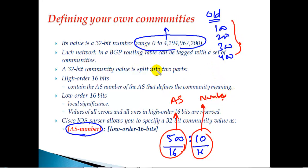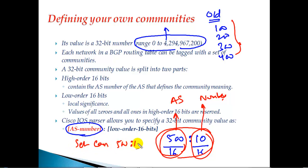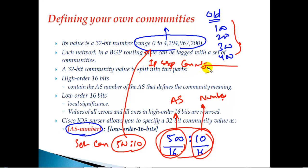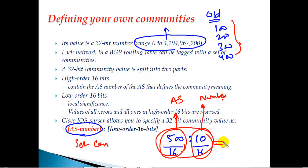If you tag routes using the new method - for example, in a route map setting community 500:10 - by default most IOS will revert to the older method. To switch to the new format, there is a command called 'ip bgp community new-format'. Once you apply that command, IOS will start using the new format for tagging. In today's networks the new method is generally preferred, but the older method is still supported. It's a 32-bit value used to tag specific routes depending on your requirements.